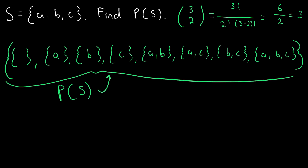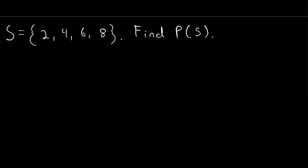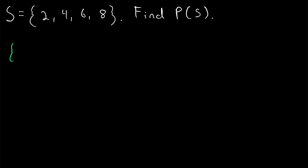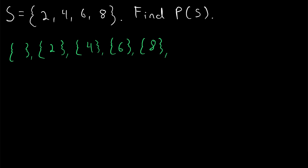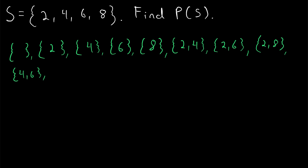Now we've got four elements to deal with. Let's start listing these subsets. First, the empty set. Then all one-element subsets: the set containing two, the set containing just four, the set containing just six, the set containing just eight. Moving on to two-element subsets: the set containing two and four, the set containing two and six, the set containing two and eight. Then the set containing four and six, the set containing four and eight, and the set containing six and eight.